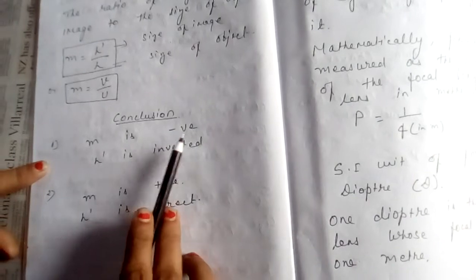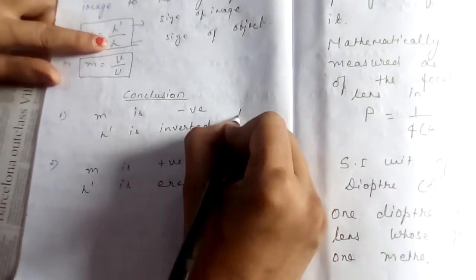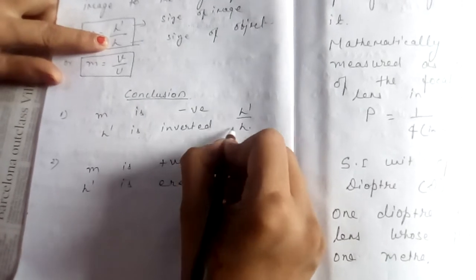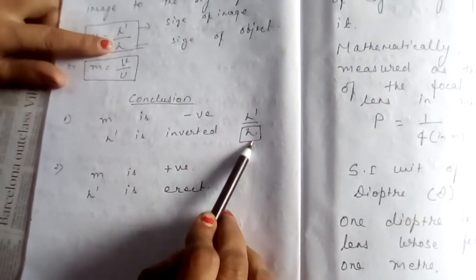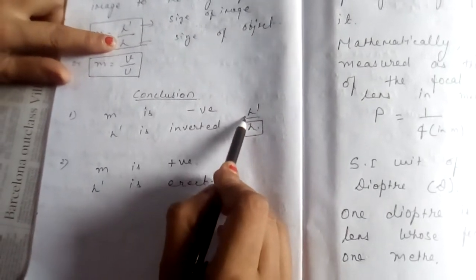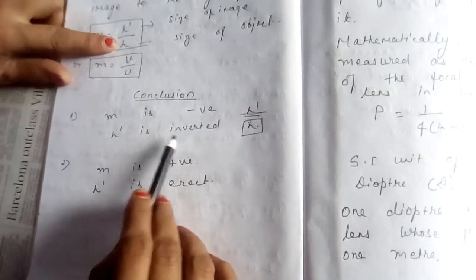If magnification is negative, H dash by H. Object size is always positive, means we have to see only the image size. So, image is inverted.